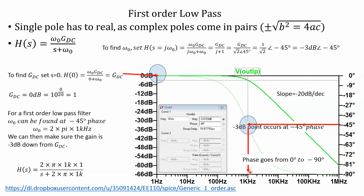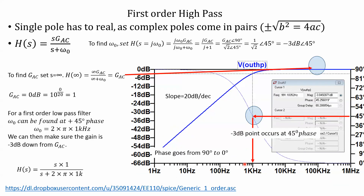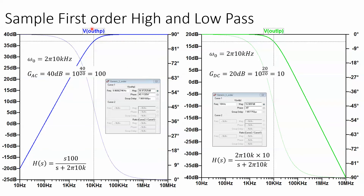For the high-pass, we have a term called AC gain, found by setting s to a very large number — the s terms cancel and we're left with the gain at high frequencies, in this case 0 dB or 1. To extract omega-naught, we substitute j·omega into the transfer function, do the complex math, and find that this occurs at +45° phase, because a high-pass filter goes from +90° down to 0°. We find the +45° phase mark, read off the frequency in kilohertz, multiply by 2π, and we have omega-naught.